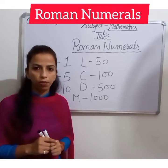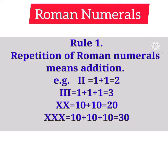For forming Roman numerals, there are some important rules. Rule one: repetition of numerals means addition. For example, II — since I stands for one, it means one plus one equals two. III equals one plus one plus one, which equals three. XX — since X stands for ten, ten plus ten equals twenty. XXX equals ten plus ten plus ten, which equals thirty.